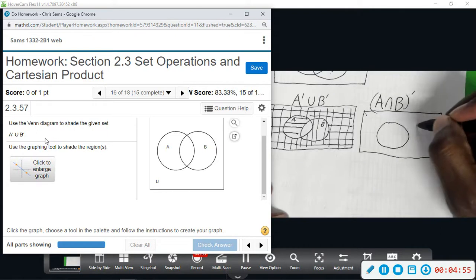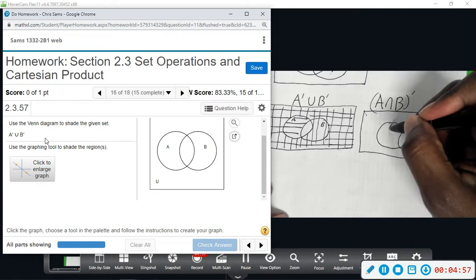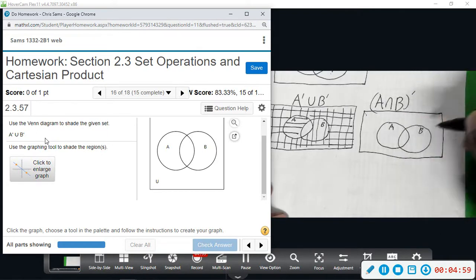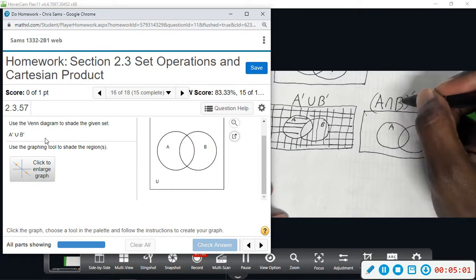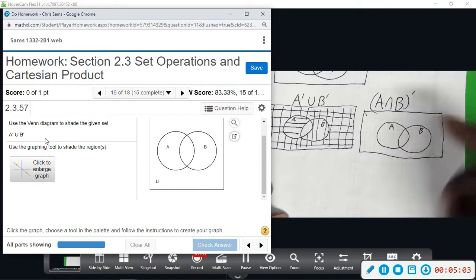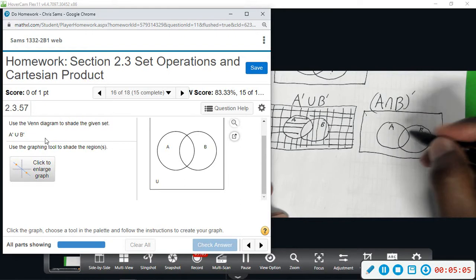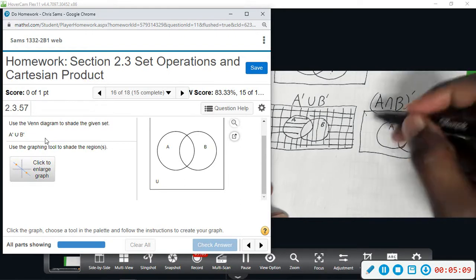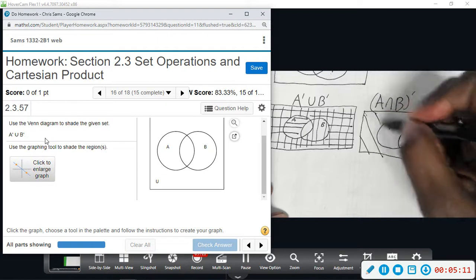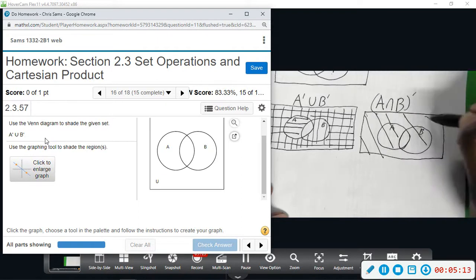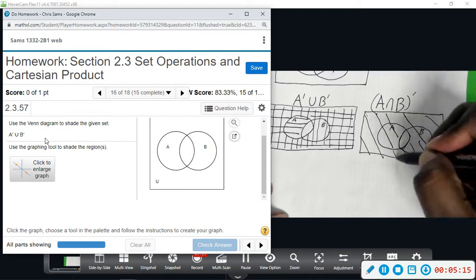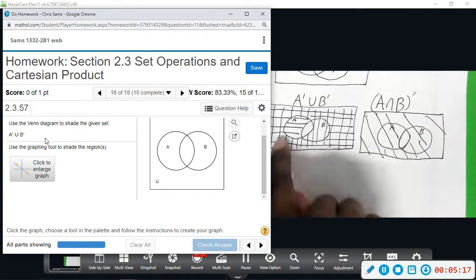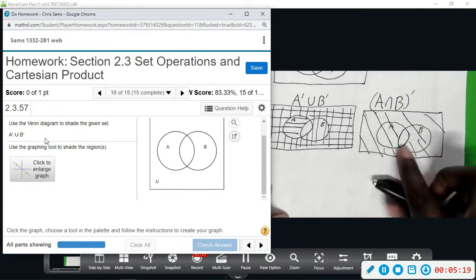We have A, we have B, and then A intersect B is this middle part but we want the opposite of that. So the opposite of this middle would give us everything except this middle piece. So the same part ends up being shaded but it's a cleaner picture here.